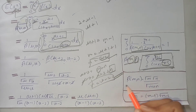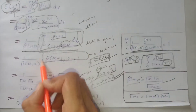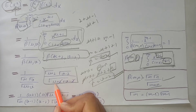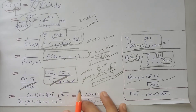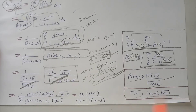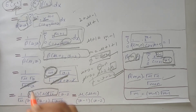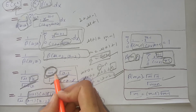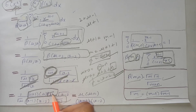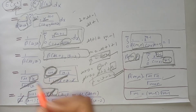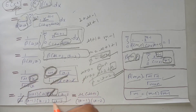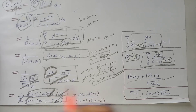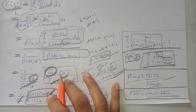We expand the beta function in terms of gamma functions. After canceling, we are left with only u+v in the denominator's gamma term. We expand gamma(u+2) twice to reach gamma(u), and expand gamma(v) twice to reach gamma(v-2), then cancel matching terms. The expectation of x squared equals u(u+1) divided by (v-1)(v-2).